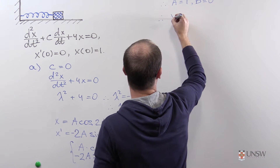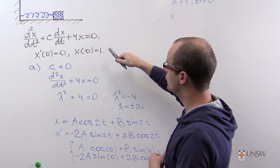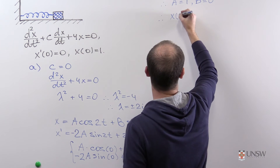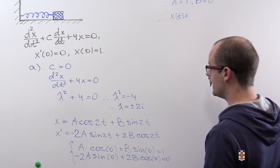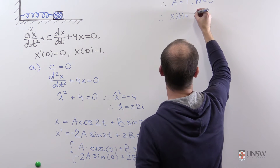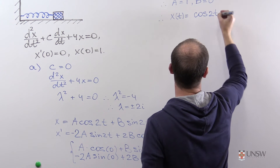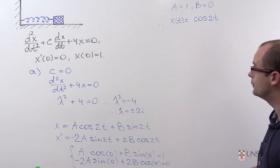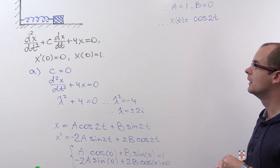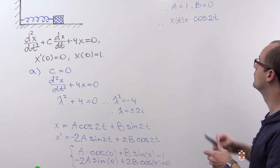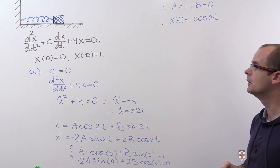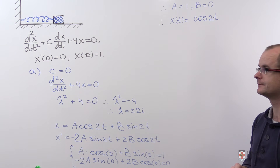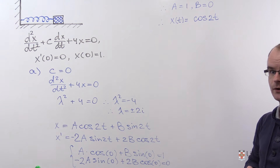Therefore, the solution to this initial value problem in the ideal case when there is no friction is x equals cosine 2t. In this situation, the movement of the block is described by the cosine function, so the block moves with constant amplitude. That's it for part a.